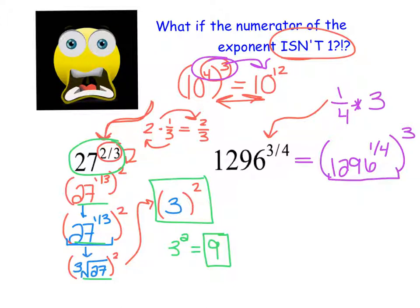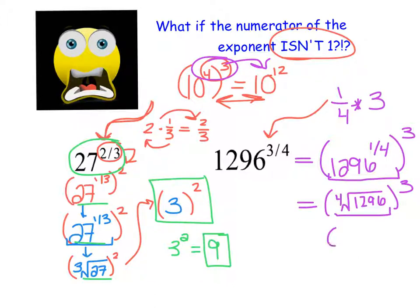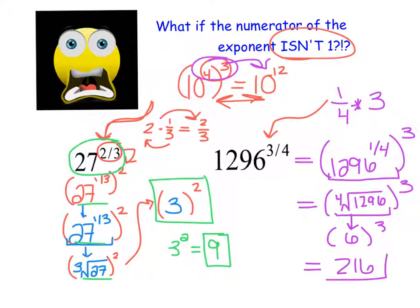I'm going to focus on this piece here and rewrite that fractional exponent with a numerator of 1 into a root. So I have the fourth root of 1296, all raised to the power of 3. Then, utilizing my powers resource, I realize that 6 to the power of 4 gives me 1296, so this portion becomes just 6. Then I have 6 to the power of 3, and I know that 6 to the power of 3 is 216.